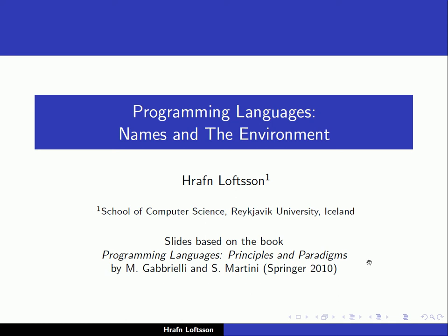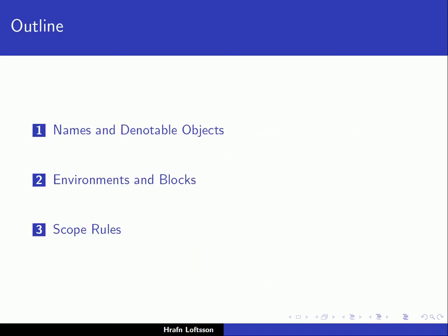Hello everyone. In our programming languages course we're now going to talk about names and the environment, and this is chapter 4 in our textbook. Here's the outline: first we'll talk about names in general and denotable objects, then environments and blocks, and finally scope rules.